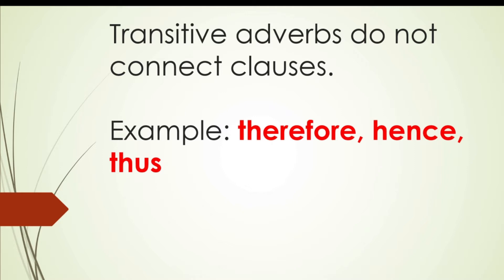So what is the difference between conjunctions and transitive adverbs? Well, in speech there is no difference that you need to remember. But when you write, you have to put a semicolon or a full stop before a transitive adverb. Most of the time, you will also need a comma after these expressions. Conjunctions are different — they connect two clauses to make one large sentence. If the clauses are lengthy, put a comma before the conjunction. Don't put a comma after it.